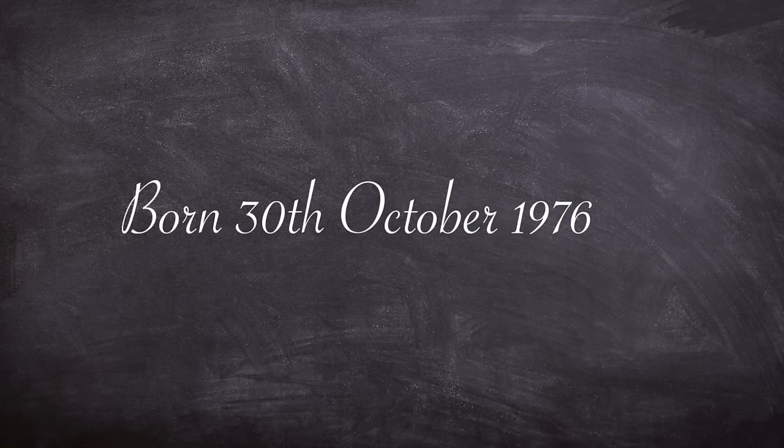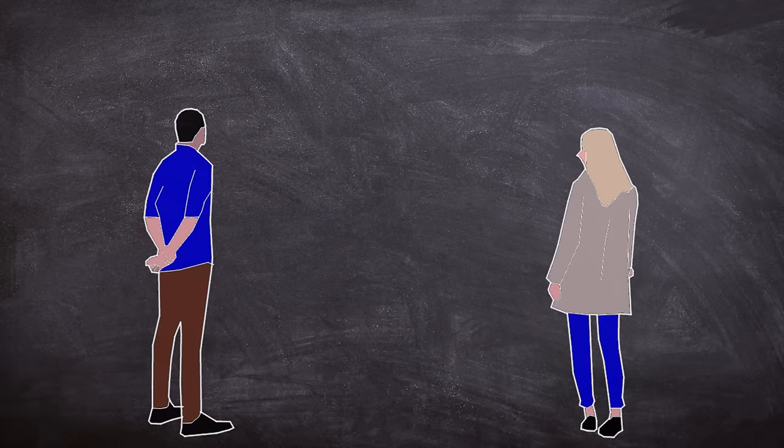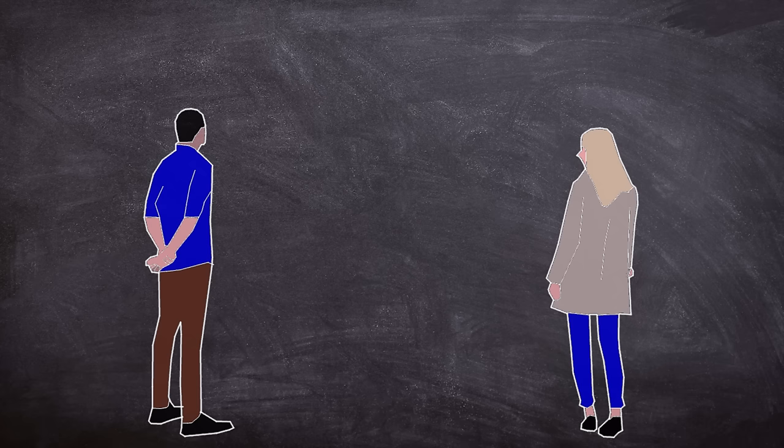David was born in 1976 on the 30th of October in Royal Oak, Michigan, which is about here on a map. As a toddler, his parents Ken and Patty Hahn divorced, meaning that David would split his time living in both parents' respective households.